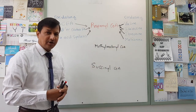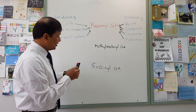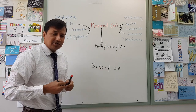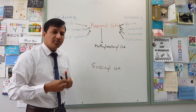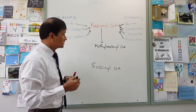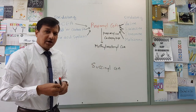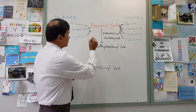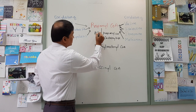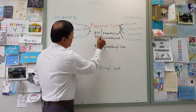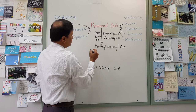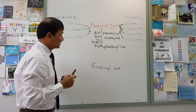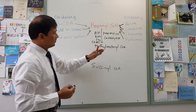Once we get Propionyl-CoA, it will be converted into methylmalonyl-CoA. This is done by an enzyme called Propionyl-CoA carboxylase. The Propionyl-CoA carboxylase enzyme needs ATP, biotin, and carbon dioxide — you can remember these three things as A, B, C: ATP, biotin, and carbon dioxide — to produce methylmalonyl-CoA.